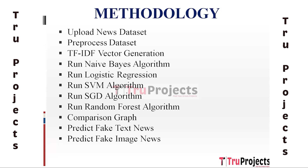The twelfth module is Report Generation. The project generates a report summarizing the results of the text and image news predictions. The report includes the predictions made by each model — Naive Bayes, Logistic Regression, SVM, SGD, and Random Forest — for text news, and the visual content analysis results for image news. This report provides insights into the authenticity of news articles, facilitating the detection of fake news in cyberspace.